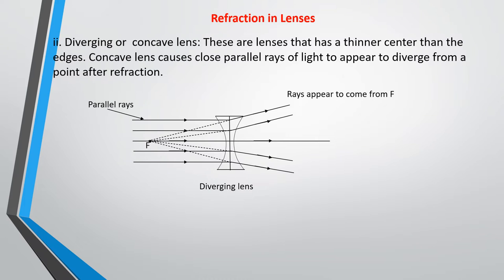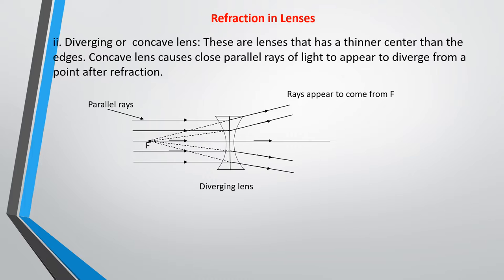Still on refraction in lenses, we have the diverging lens, which is the second type. For the diverging lens, the center is thinner than the edges. The rays of light that pass through it appear to diverge after refraction. Looking at these rays, they will all diverge from the center of the lens, and there are virtual rays that appear to converge at a point behind. So this is a typical diverging or concave lens, while the one we looked at before is a convex or converging lens.